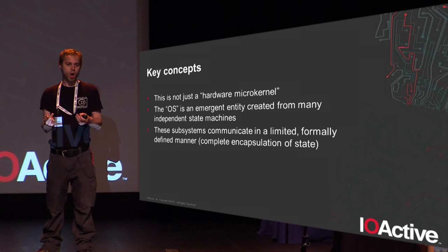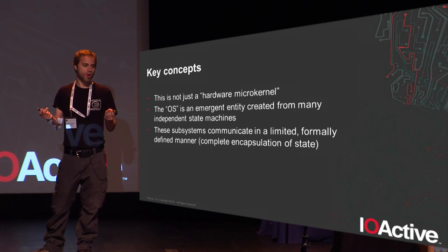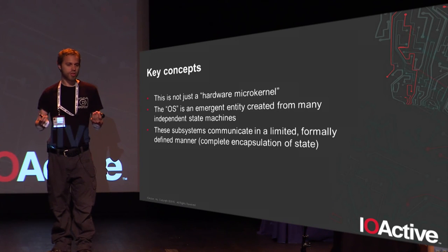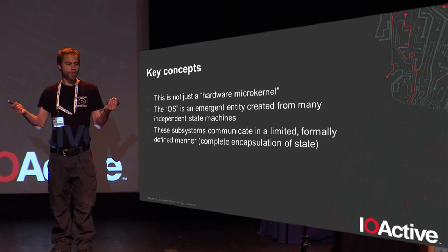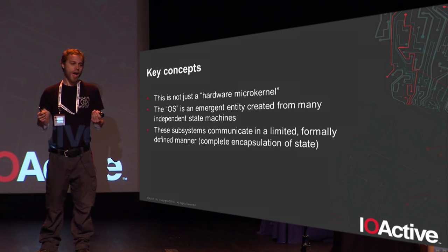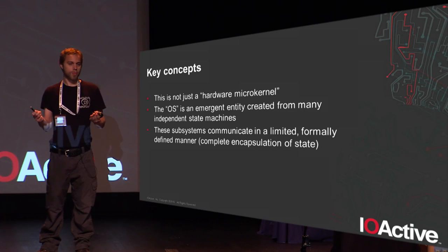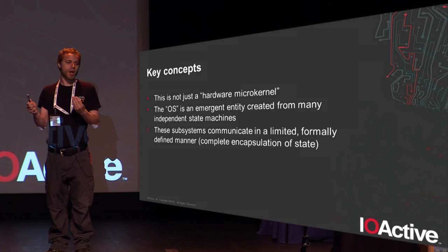Since modules communicate in a limited and formally defined manner, you can do correctness verification on a per-module basis and know there are no other interactions between them. In hardware, formal correctness analysis is much easier than in an RTOS or monolithic kernel where you share one address space — one bad pointer anywhere outside proven code throws all your proofs out the window. In hardware, barring analog effects like Rowhammer, if there are no wires connecting your module to another module, they cannot affect your state. So you can take third-party IP you don't fully trust and still guarantee certain things it cannot do.